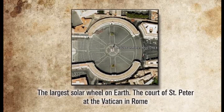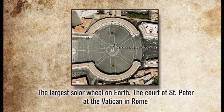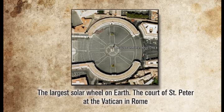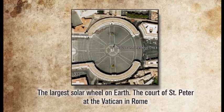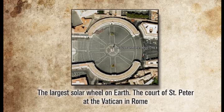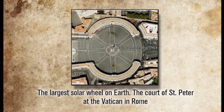I zoomed in to the Vatican using Google Earth and discovered this is the largest solar wheel on Earth — the Court of St. Peter at the Vatican in Rome. There are eight quadrants here, exactly the number found in ancient pagan solar wheels. These lines were painted to be a solar wheel — this building was constructed to be an ancient solar wheel, and today we know it is connected to ancient pagan sun god worship.